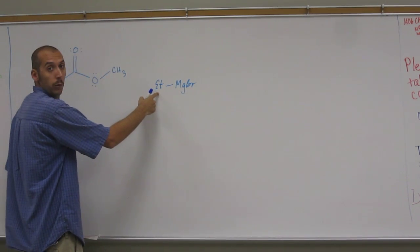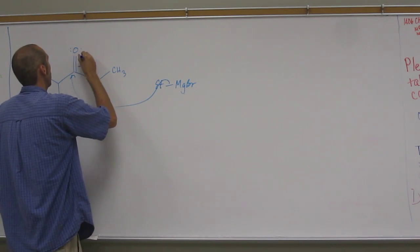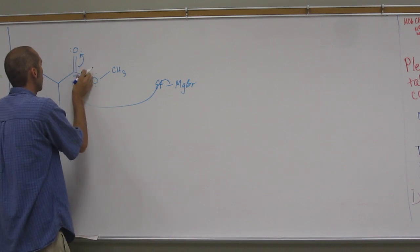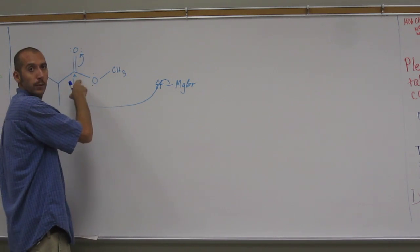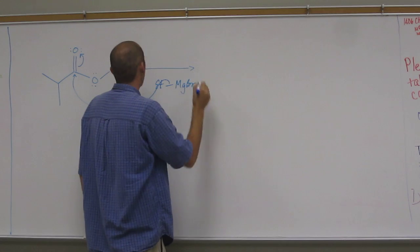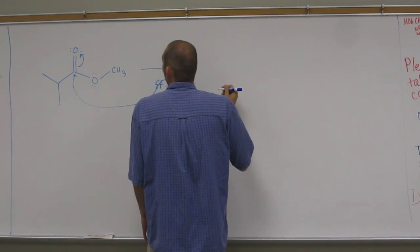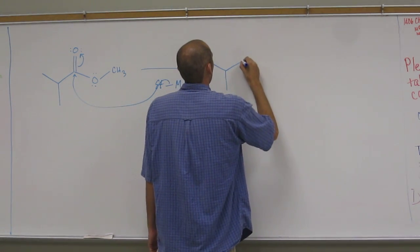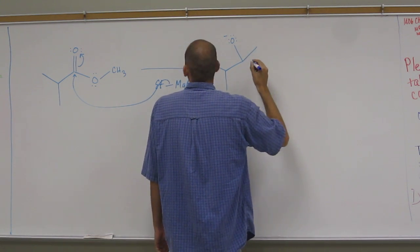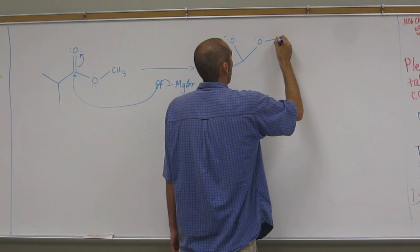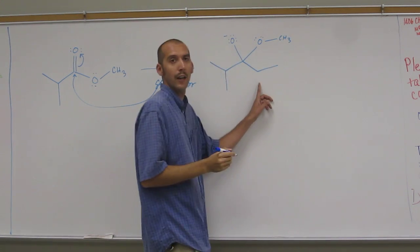So remember, this is essentially a carbanion, right? So it's going to attack that carbonyl carbon. So it's going from sp2 to sp3 intermediate. The intermediate, of course, is going to have stereochemistry, but it's going to break back down, so we don't have to worry about it. So that's the newly added alkyl group there.